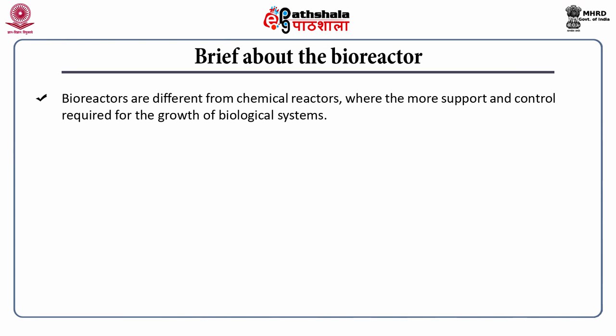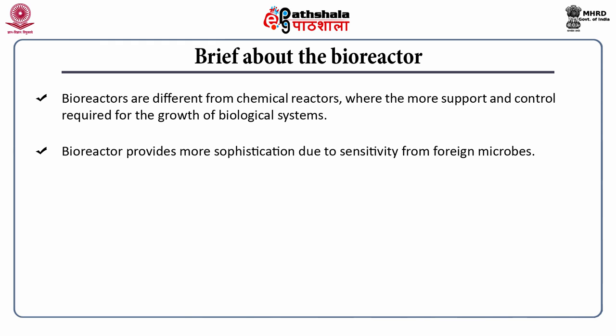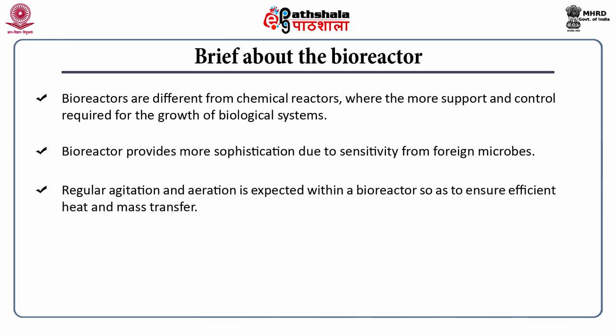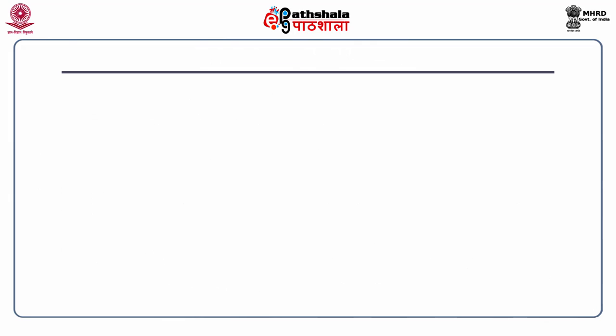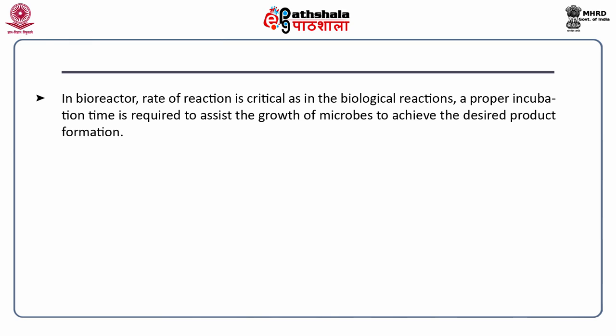Bioreactors are different from chemical reactors — bioreactors require more support and control for the growth of biological systems. They provide more sophistication due to sensitivity to foreign microbes, as lack of sophistication may lead to contamination. Regular agitation and aeration are required within a bioreactor to ensure sufficient heat and mass transfer. Bioreactors are highly selective to produce desired products, which is especially important in the production of antibiotics, steroids, vitamins, proteins, certain sugars, and organic acids.